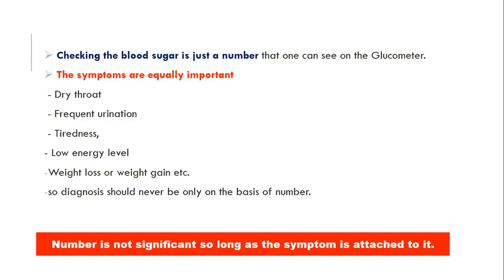So what is important for diagnosis? Checking blood sugar level is just a number seen on a glucometer. Symptoms are equally important — the patient may have dry throat, frequent urination, tiredness, low energy level, weight loss or weight gain, etc. Diagnosis should never be only on the basis of a number. The number is not significant as long as the symptom is attached to it.